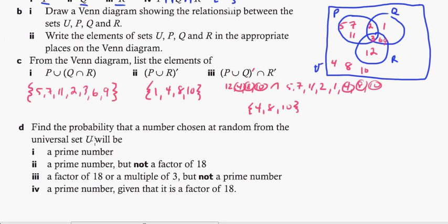So let's look at the last part here. We got some probability. It says find the probability that a number chosen at random from the universal set will be a prime number. Let's look at the prime numbers here: 2, 3, 5, 7, 11. That is going to be - there's 12 numbers, 1 through 12 - so it's going to be 5 out of 12. A prime number but not a factor of 18. These two are factors of 18, and these are prime numbers. So this is just going to be 1, 2, 3. This is going to be 3 out of 12.